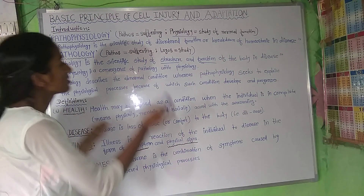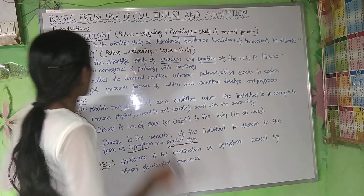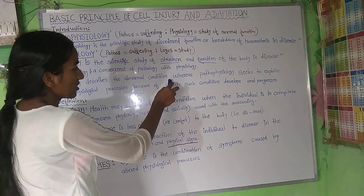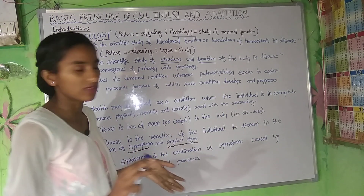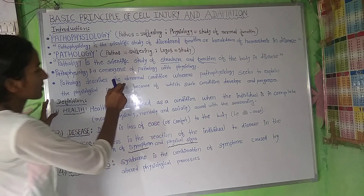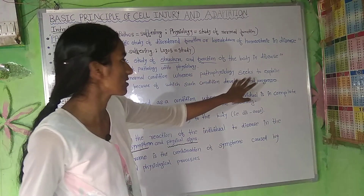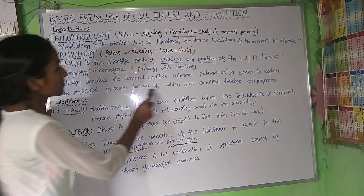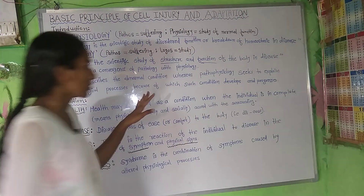Pathophysiology is a convergence of pathology with physiology. Pathology describes the abnormal condition, whereas pathophysiology seeks to explain the physiological processes because of which the condition develops and progresses.